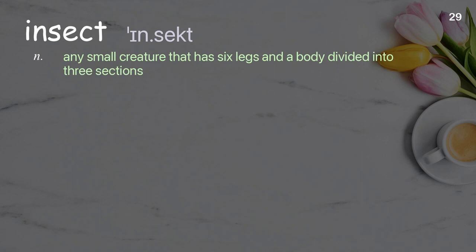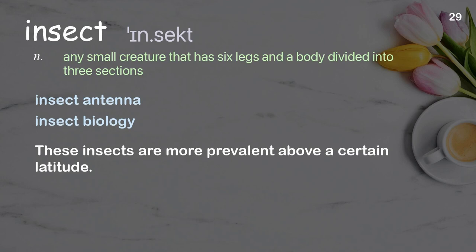Insect: Any small creature that has six legs and a body divided into three sections. Examples: insect antenna, insect biology. These insects are more prevalent above a certain latitude.